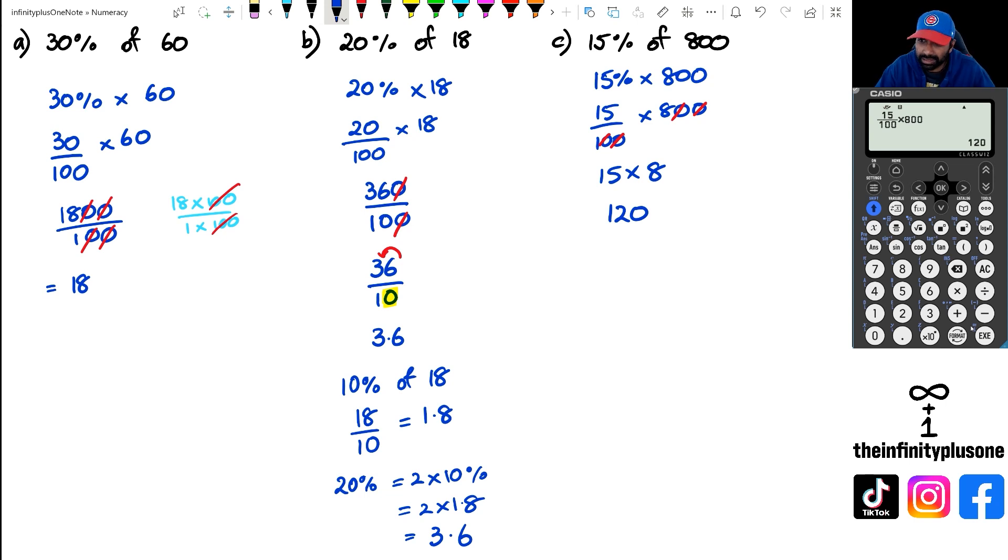If I want to try the 10% method, what I could have done is I could have gone 10% of 800, because that's quite easy, because 800 divided by 10, I can just kind of do that in my head. I go 800 divided by 10 equals 80. So if 10% is 80, then 5%, which is half of 10%, which means half of 80 is 40.